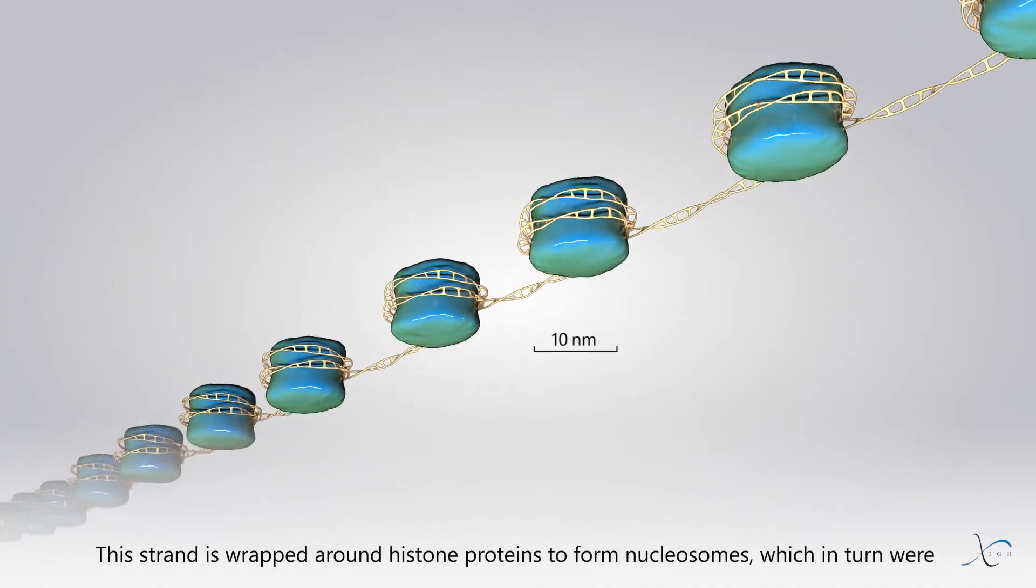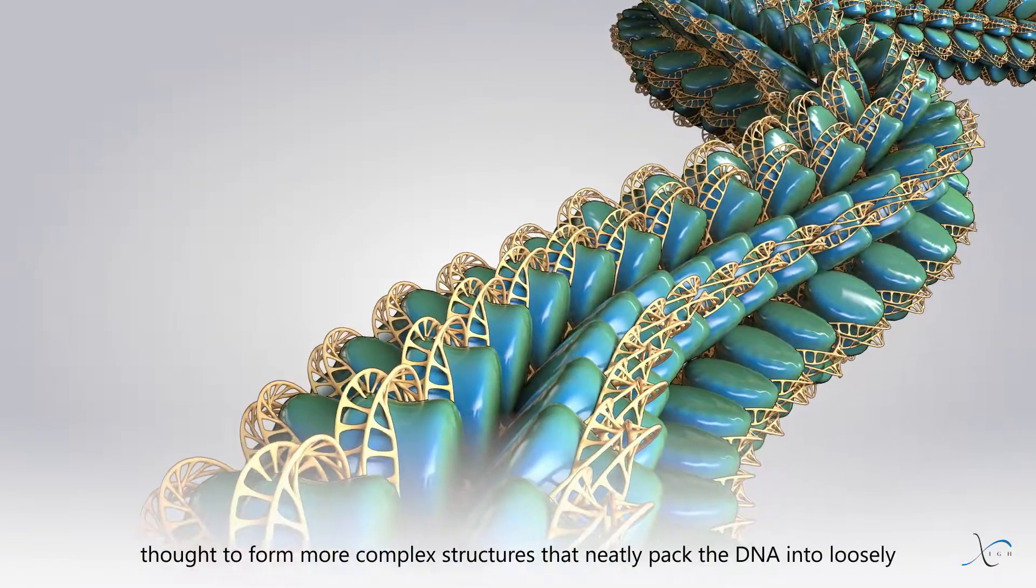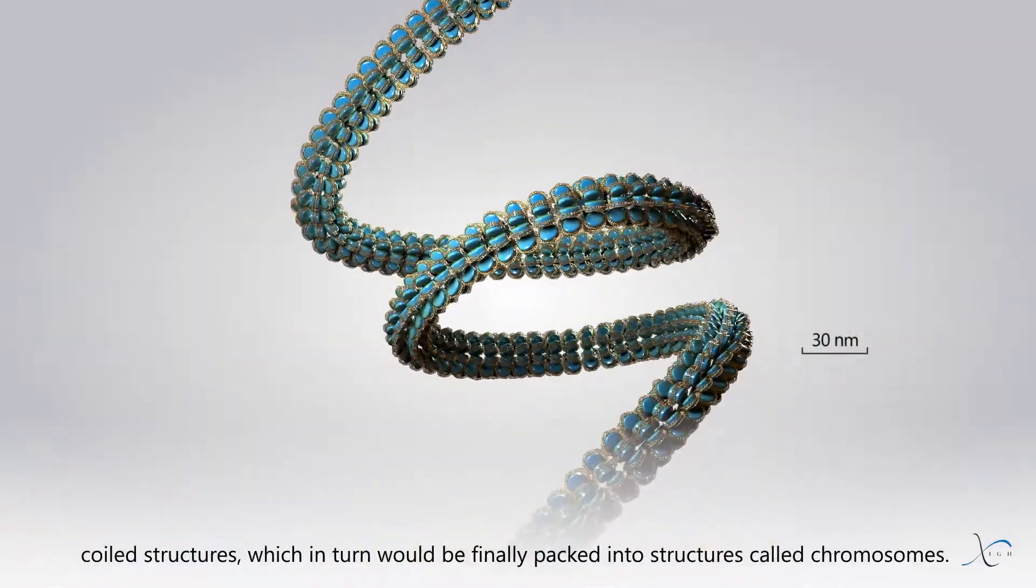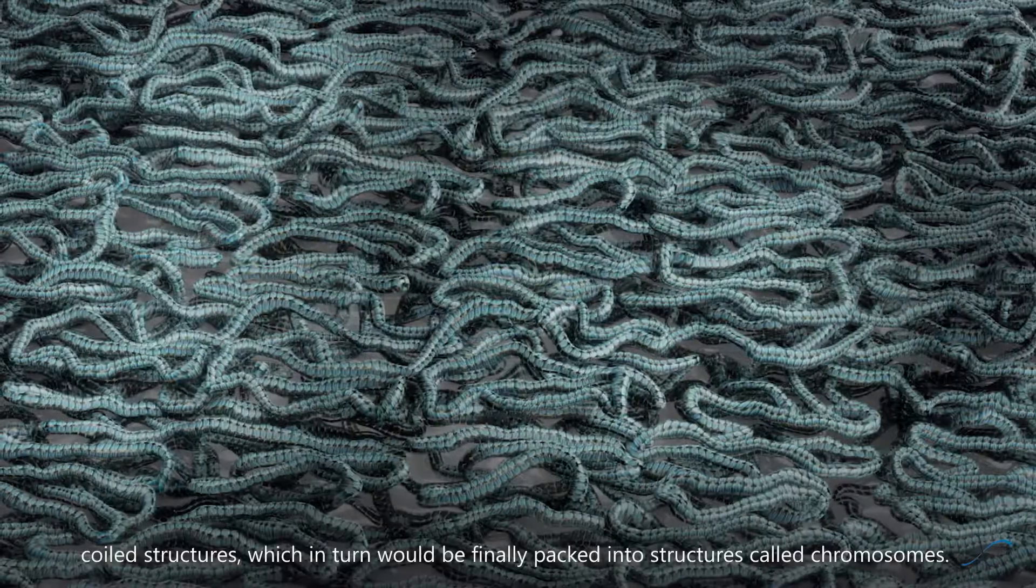This strand is wrapped around histone proteins to form nucleosomes, which in turn were thought to form more complex structures that neatly pack the DNA into loosely coiled structures, which in turn would be finely packed into structures called chromosomes.